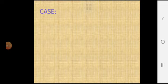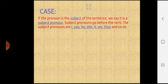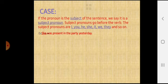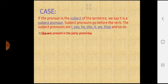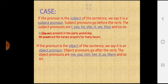Next is case. If the pronoun is the subject of the sentence, we say it is a subject pronoun. Subject pronouns go before the verb. The subject pronouns are I, you, he, she, it, we, they and so on. For example, she was present in the party yesterday. In this sentence, she is the subject pronoun. Next example, we practice the karate prayers for many hours. In this sentence, we is subject pronoun.